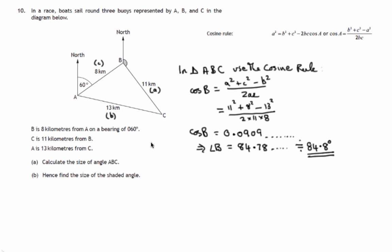So that's part A. I've calculated the size of angle ABC as 84.8. So part B, we're asked to work out this shaded angle. Now,